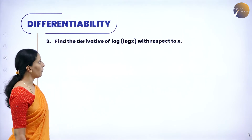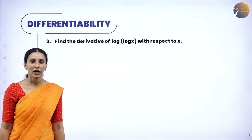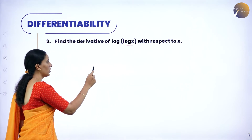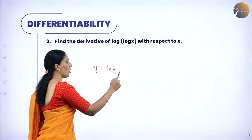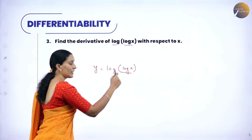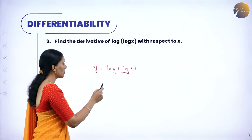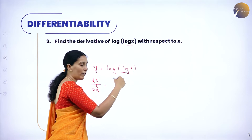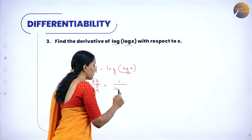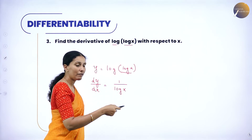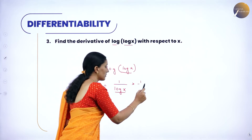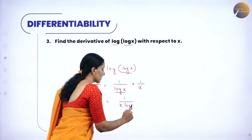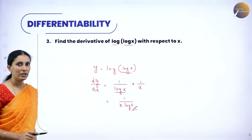Next, find the derivative of log(log(log x)) with respect to x. We know for a log function its derivative is 1/x. Let y = log(log x). The derivative of log of anything is 1/x form, so dy/dx becomes 1/log x. But this is not simply x — it is log x again, so differentiate once more. The derivative of log x is 1/x. Therefore, the derivative is 1/(x·log x).